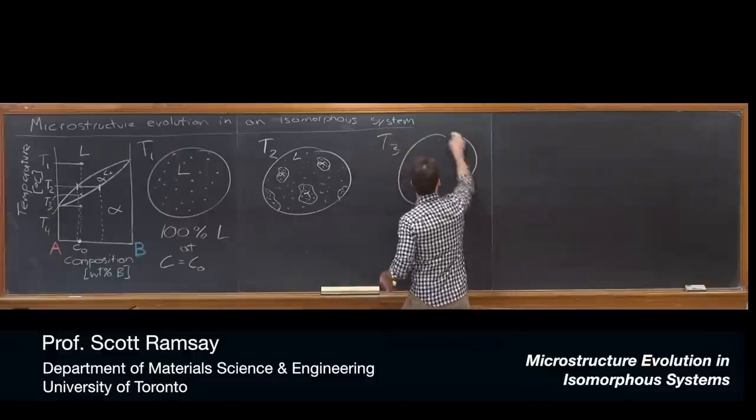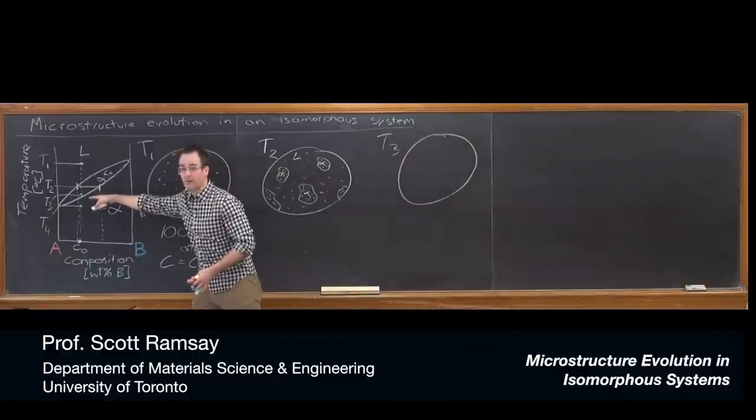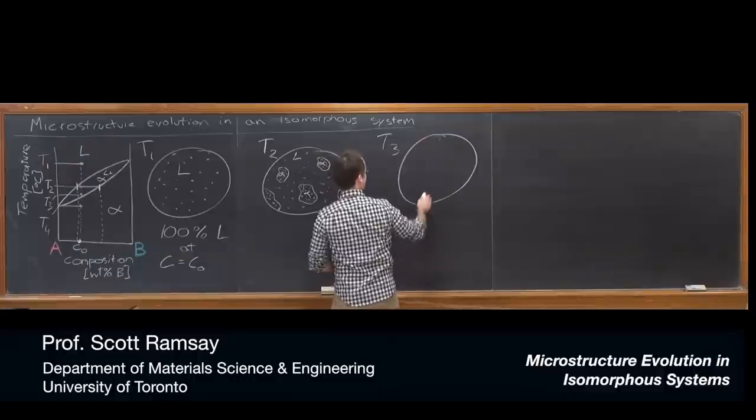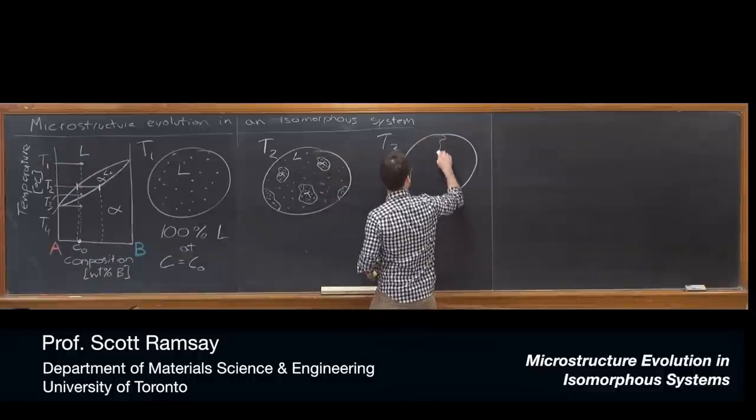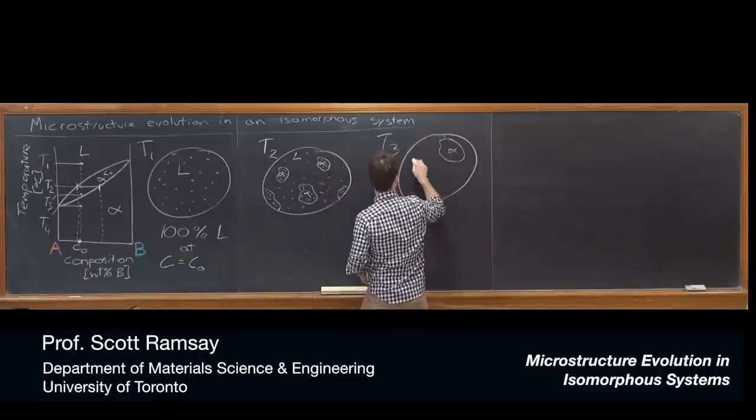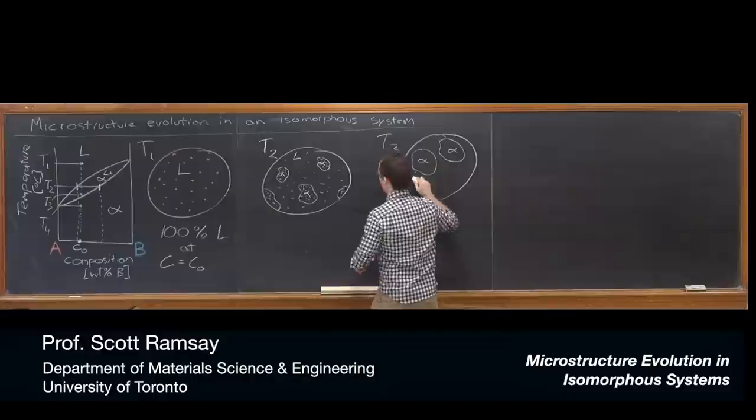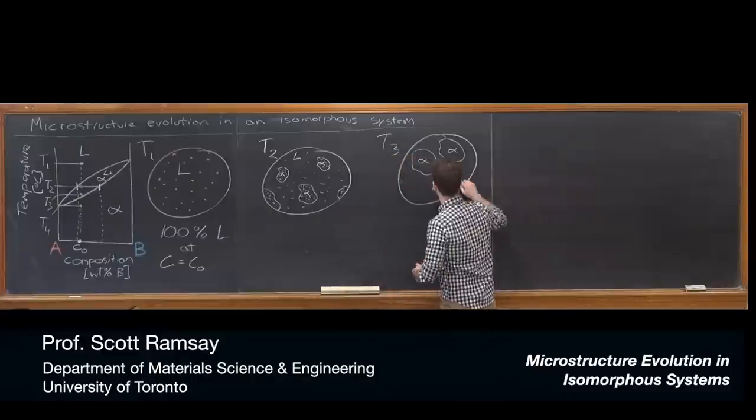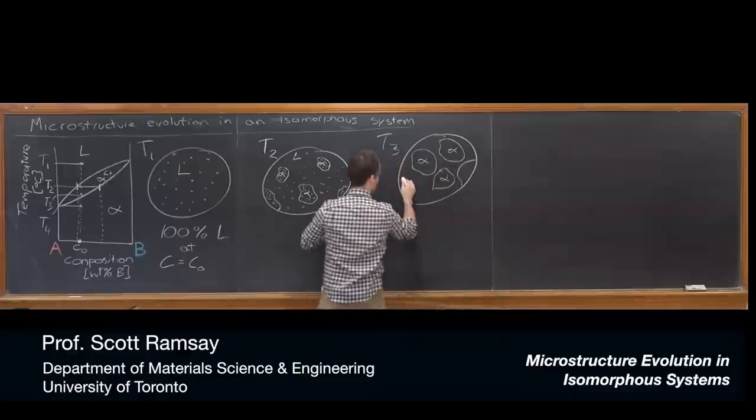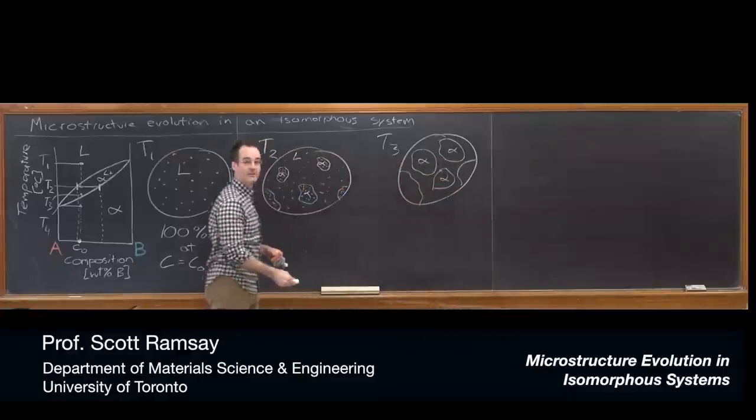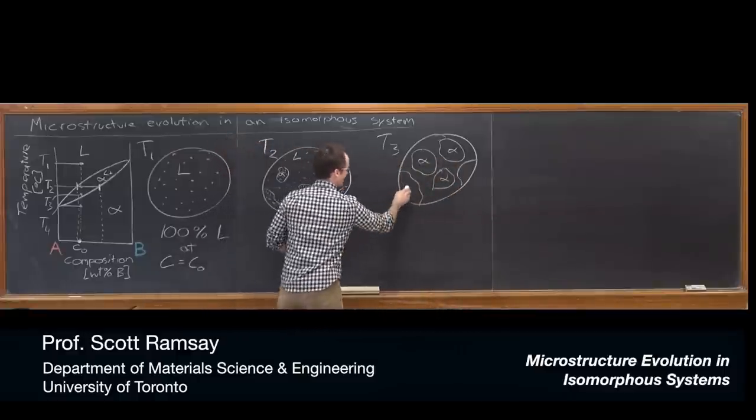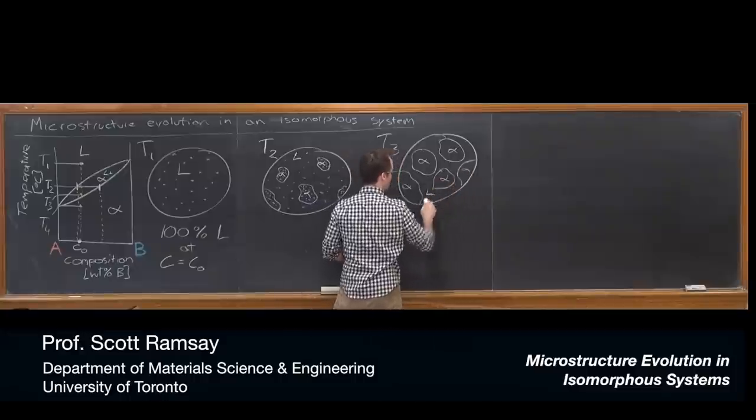If we continue to cool down, T3, just above the solidus now, is going to have those same particles, alpha particles, but they've gotten bigger. So I'm just going to try my best to draw what they might look like if the grain boundaries had gotten bigger, but their position stayed the same. And these are all alpha, single phase alpha, and the rest is liquid.